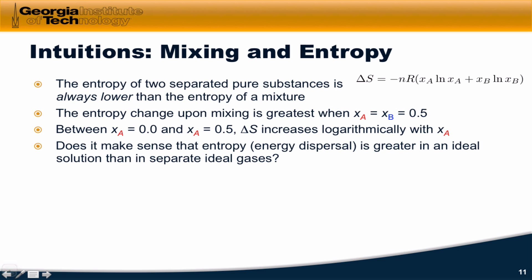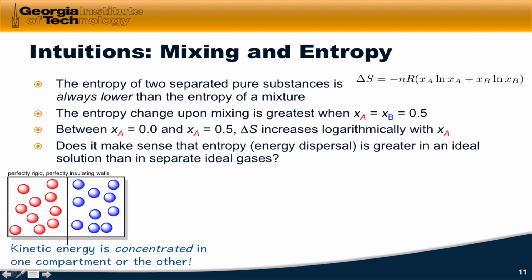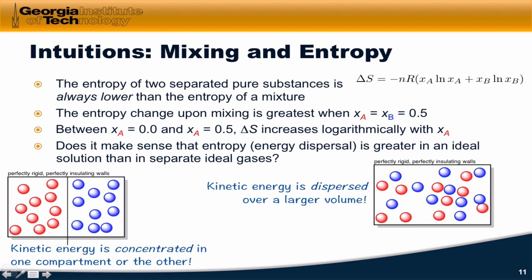Does it make sense that entropy is greater in an ideal solution, this mixture of ideal gases, than in the separate ideal gases? Well, it should. Think back to our idea of entropy as energy dispersal. In the separated gases, the kinetic energy of each is constrained or concentrated in the two compartments, separate from one another. But when we remove the partition and allow the gases to mix, the kinetic energy of both gases becomes dispersed over a larger volume. So entropy increases due to this energy dispersal that's going on.